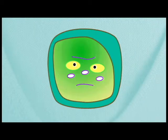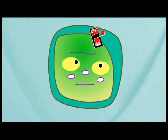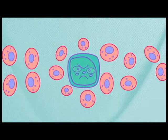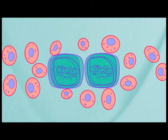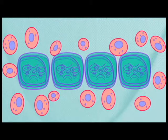ALL occurs when a blood-forming cell gets damaged. The switch inside this damaged cell gets stuck in the on position, and the damaged cell starts multiplying. The new cells that are formed are called blasts.